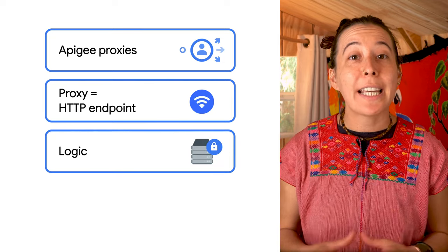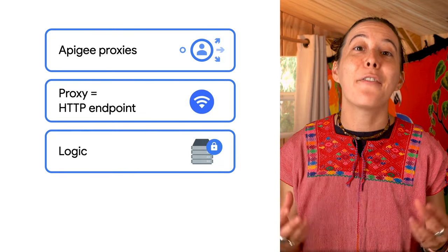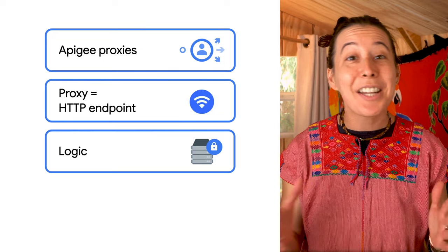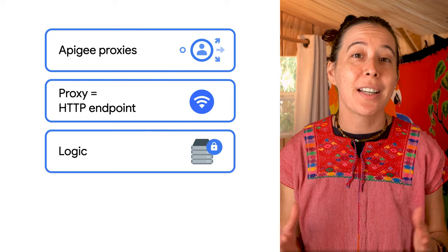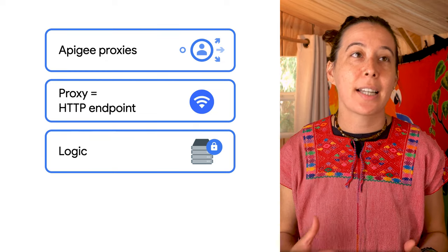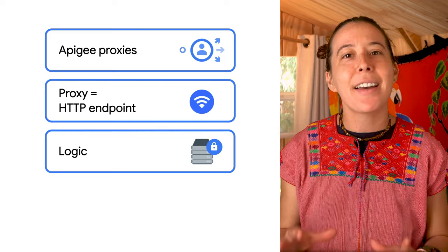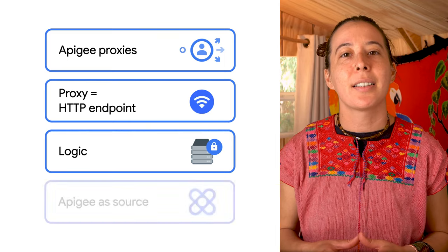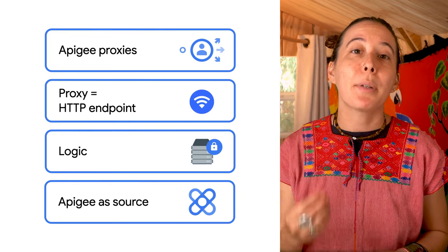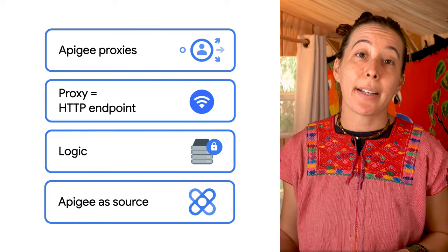You can optionally apply policies on a proxy to add functionality to a service without having to make any changes to the actual backend service, such as data transformations, filtering, conditional logic, custom code, and many other actions. The important thing to remember is that you implement policies on Apigee, not on your backend server.